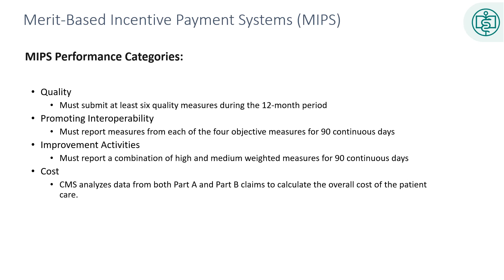Quality is used to assess the value of care to ensure patients get the right care at the right time. Promoting Interoperability ensures the secure exchange of health information and use of certified electronic health record technology for coordination of care; its four objective measures are e-prescribing, health information exchange, provider-to-patient exchange, and public health and clinical data exchange. The goal of the Improvement Activities category is to promote practice access, population management, care coordination, beneficiary engagement, patient safety, practice assessment, participation in an APM, health equity, emergency preparedness and response, and integrated behavioral and mental health. There are approximately 90 weighted measures in this quality measure set.